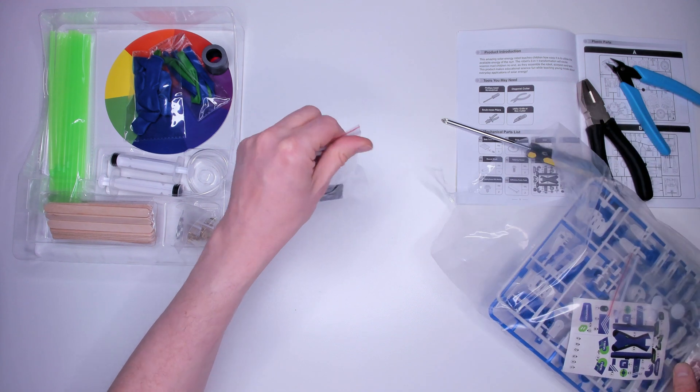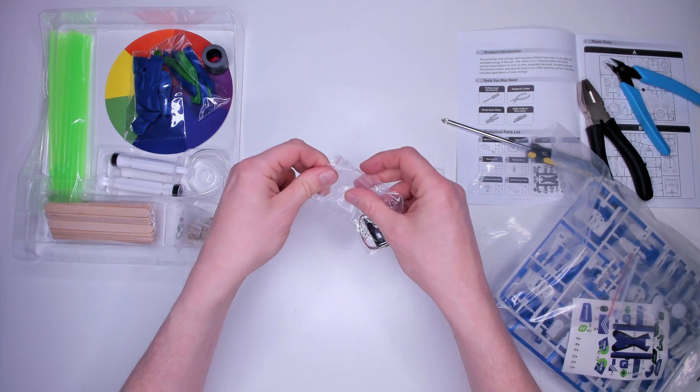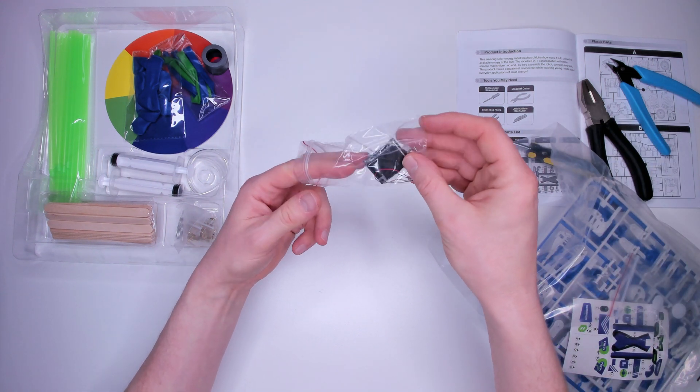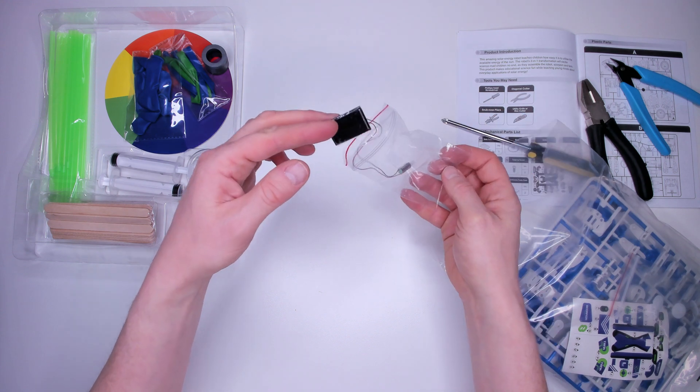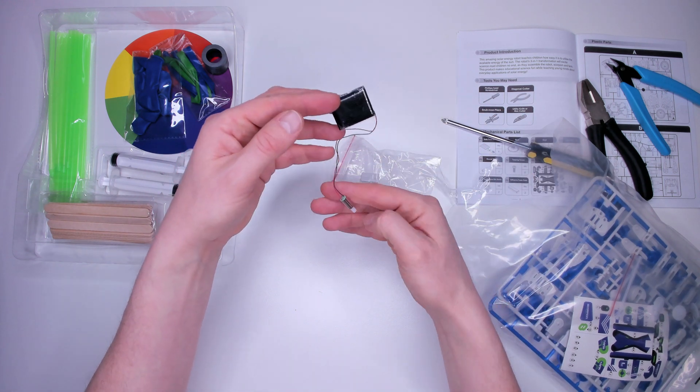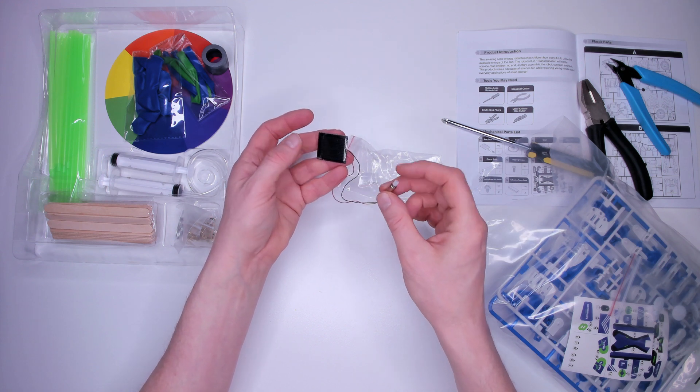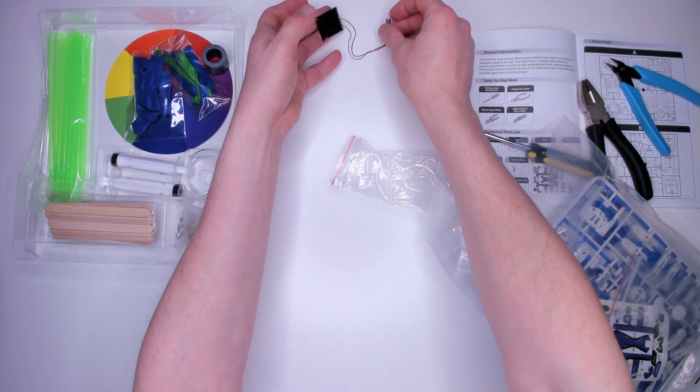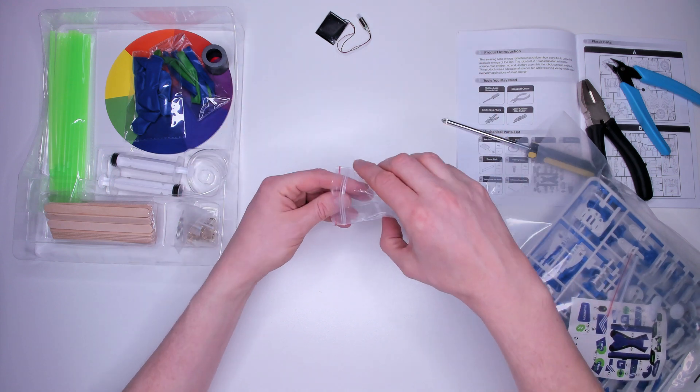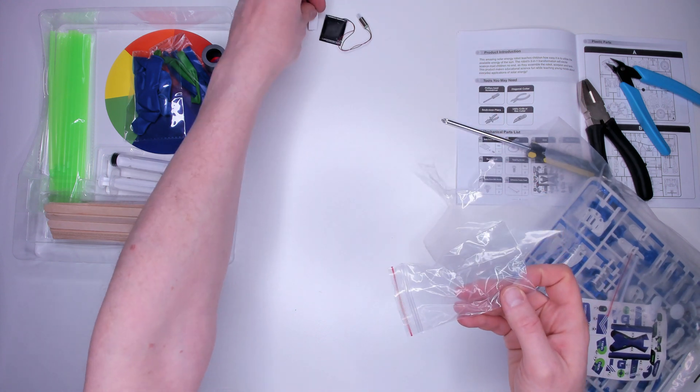There's a little bag in here. It's the solar panel on very tiny thin wires and the motor on the end of it. And also some sticky pads inside.